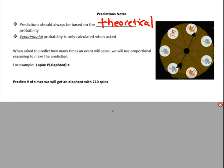When we're asked to make a prediction about how many times an event will occur, we're going to use proportional reasoning. We're still not getting away from those proportions — we're going to use that to make a prediction.